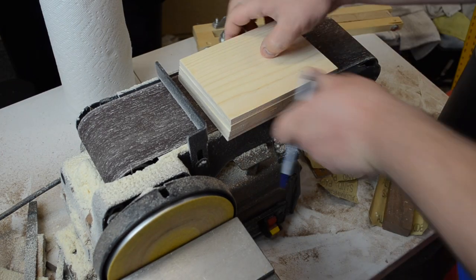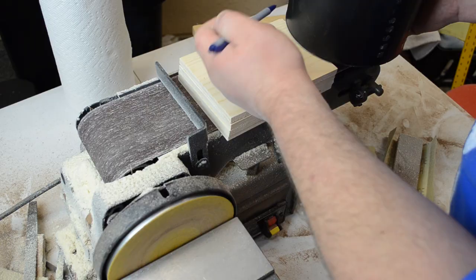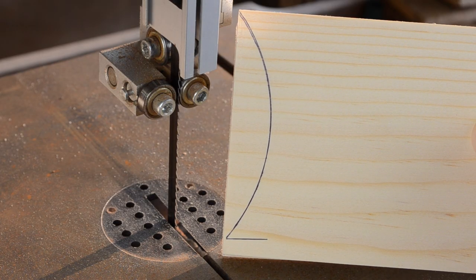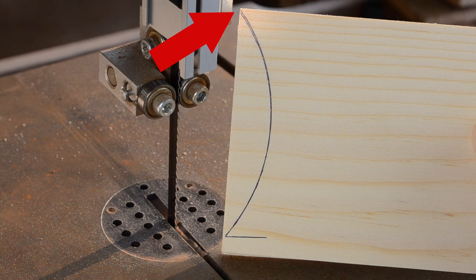I then drew a small curve on the bottom of the pieces. Note that the curve is not centered on the width of the material. The curve ends at one of the corners and is approximately three eighths of an inch in from the other edge. This will help later with glue up.